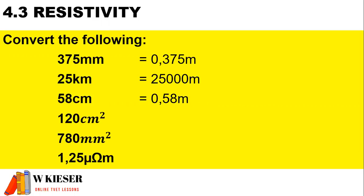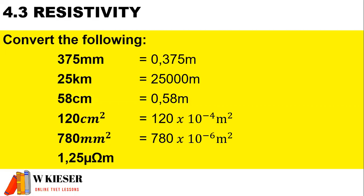To convert 120 centimeters squared into meters squared, we would multiply by 10 to the power of minus 4. To convert 780 millimeters squared into meters squared, we would multiply by 10 to the power of minus 6. To convert 1.25 micro-ohm meters into ohm meters, we would multiply by 10 to the power of minus 6.